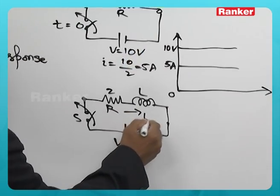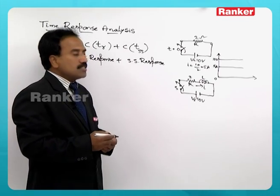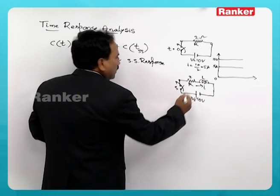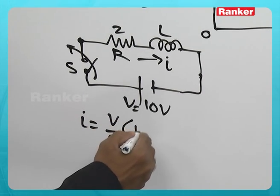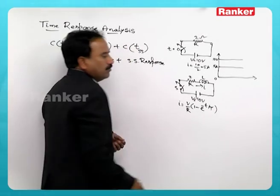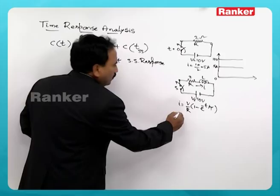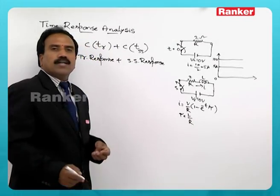Then what will be the current in the circuit? Current will build up in the RL circuit and that current is given by V by R into 1 minus e power minus t by tau, where tau is the time constant of RL circuit.